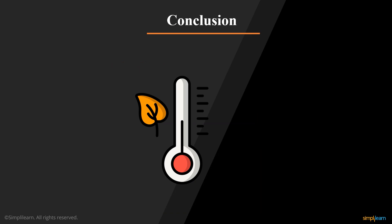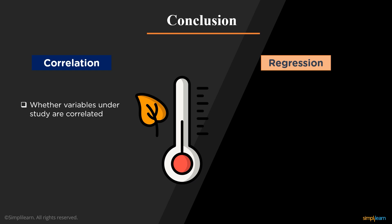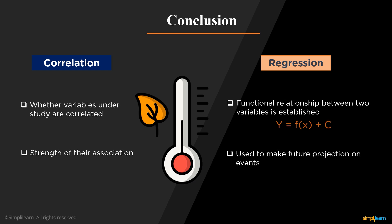With the above discussion, we can conclude that there is a big difference between the correlation and regression, although these are studied together. Correlation is used to study whether the variables under study are correlated. Whereas, regression is used to establish a functional relationship between the two variables. The equation of the regression line is of form y equals fx plus c. Correlation is used to establish the strength of the association between the two variables that are being studied. Whereas, regression is used to make the future predictions on any given event.